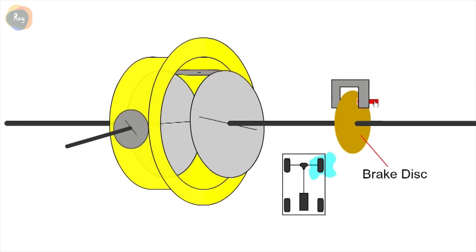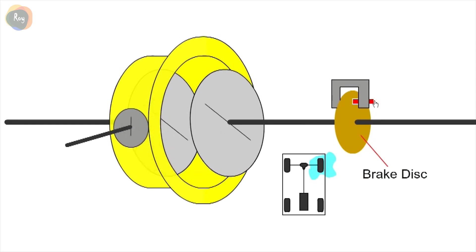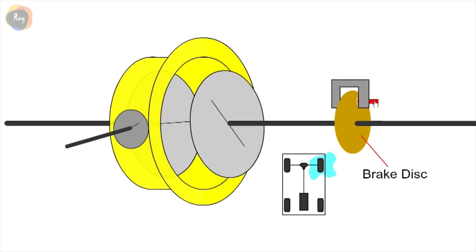This is called EDL, electronic differential lock. The brake is applied and released in an effort to transmit torque to the wheel with good traction.